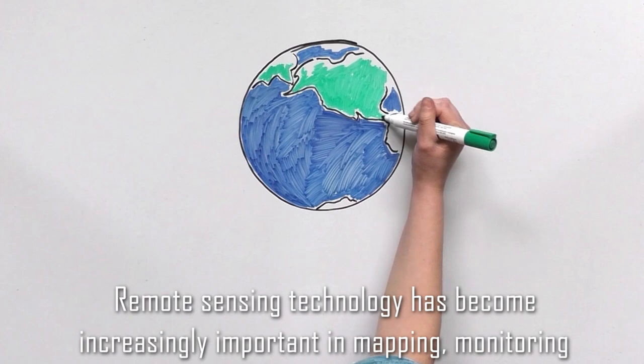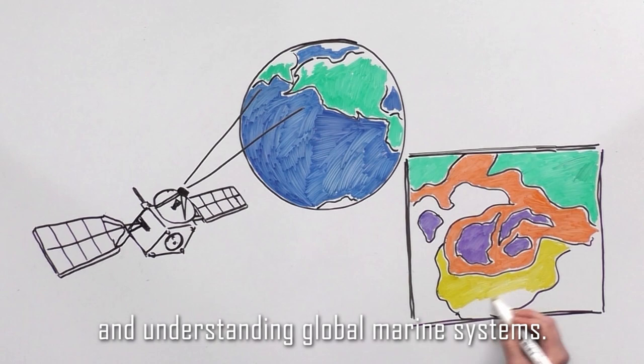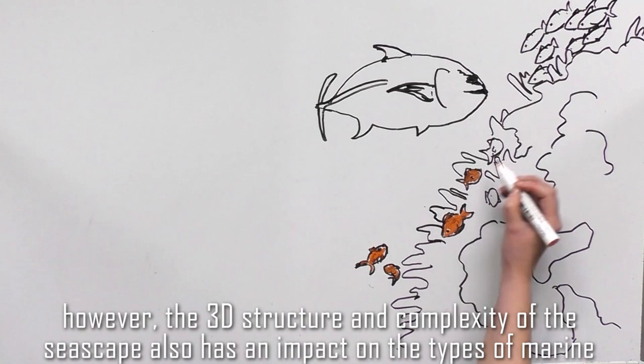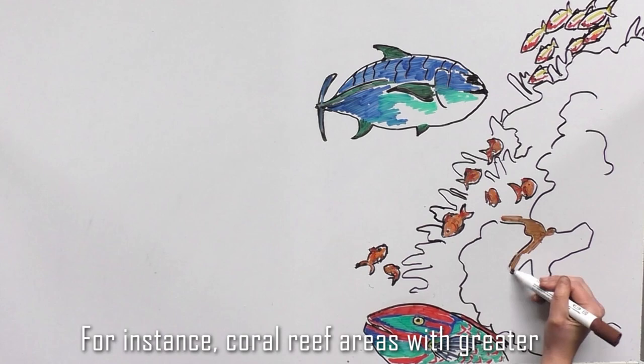Remote sensing technology has become increasingly important in mapping, monitoring and understanding global marine systems. Maps of the marine environment can show where different types of habitat are found. However, the 3D structure and complexity of the seascape also has an impact on the type of marine species that habitat can support.